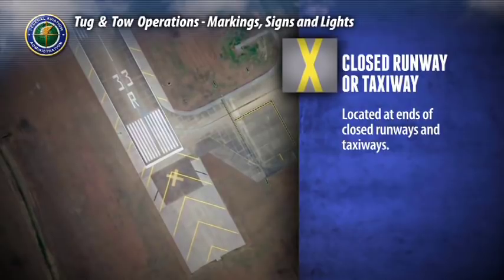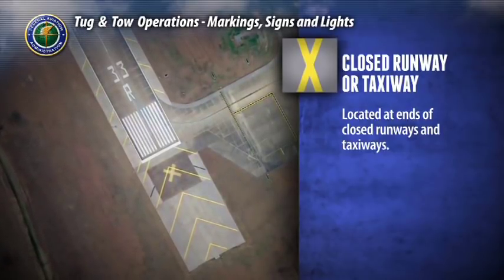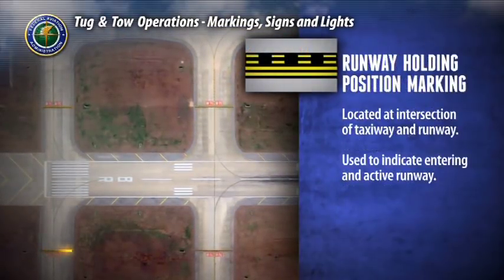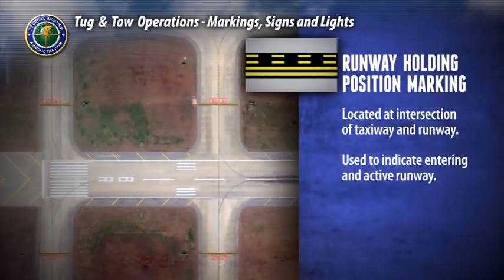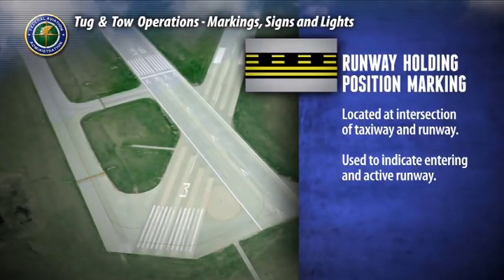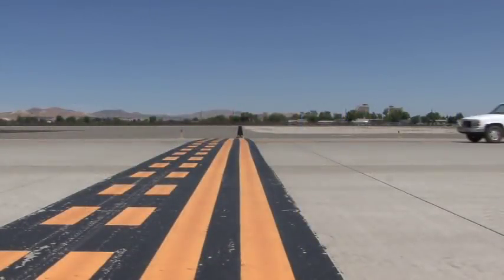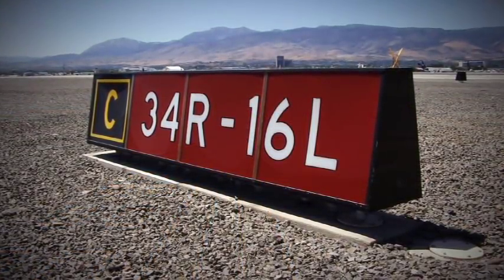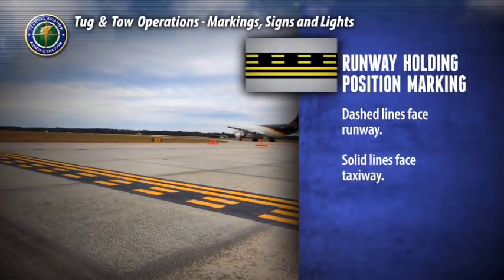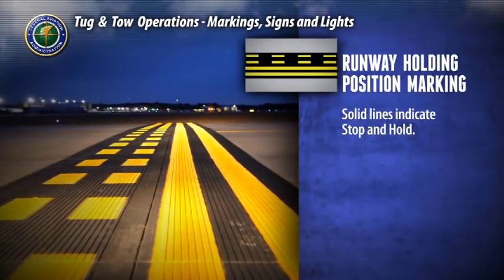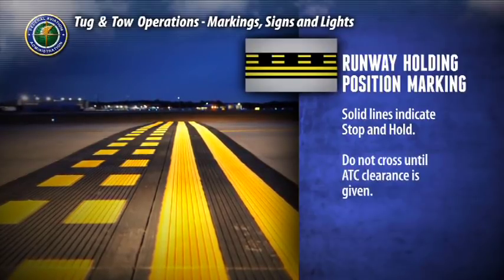A closed runway and taxiway marking is located at the ends of closed runways and taxiways — movement beyond this marking is strictly prohibited, and a raised lighted sign may also be used. Runway holding position markings are generally found at the intersection of a taxiway and a runway, and are used to indicate that you are about to enter an active runway. The dashed lines will be on the side toward the runway and the solid lines will be on the side toward the taxiway. The solid lines indicate that you are to stop and hold at this marking, not crossing until you receive clearance from air traffic control.